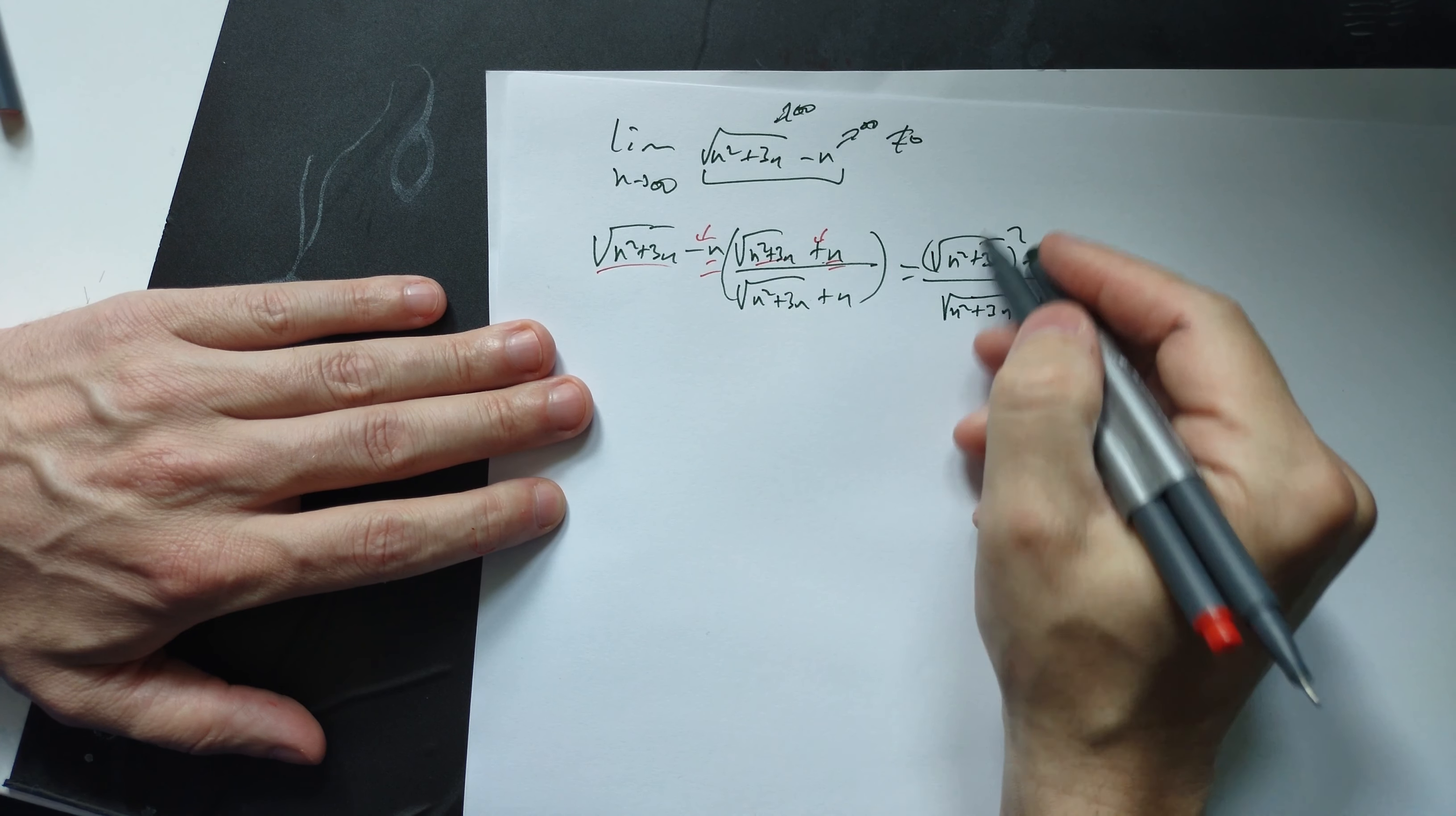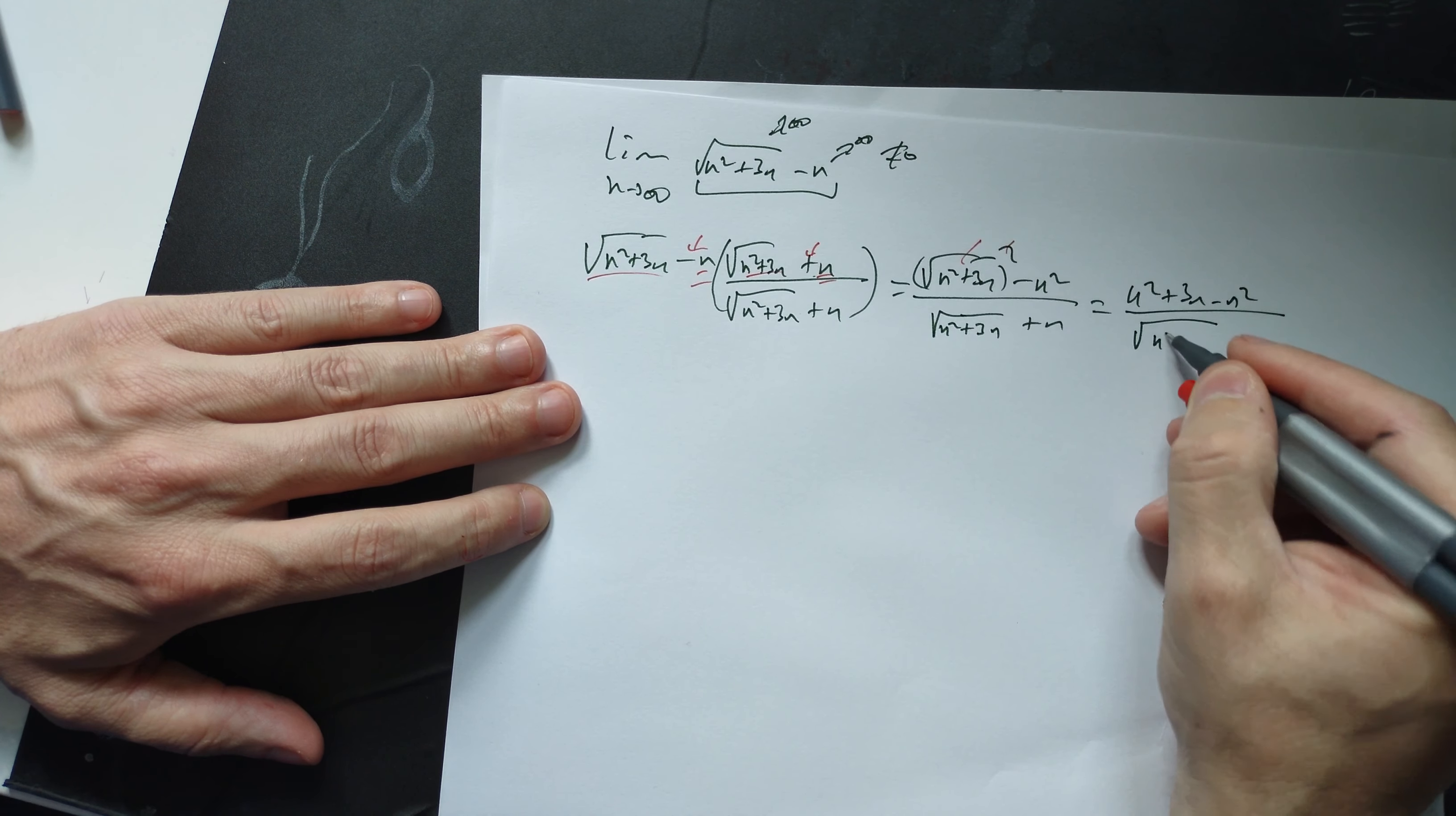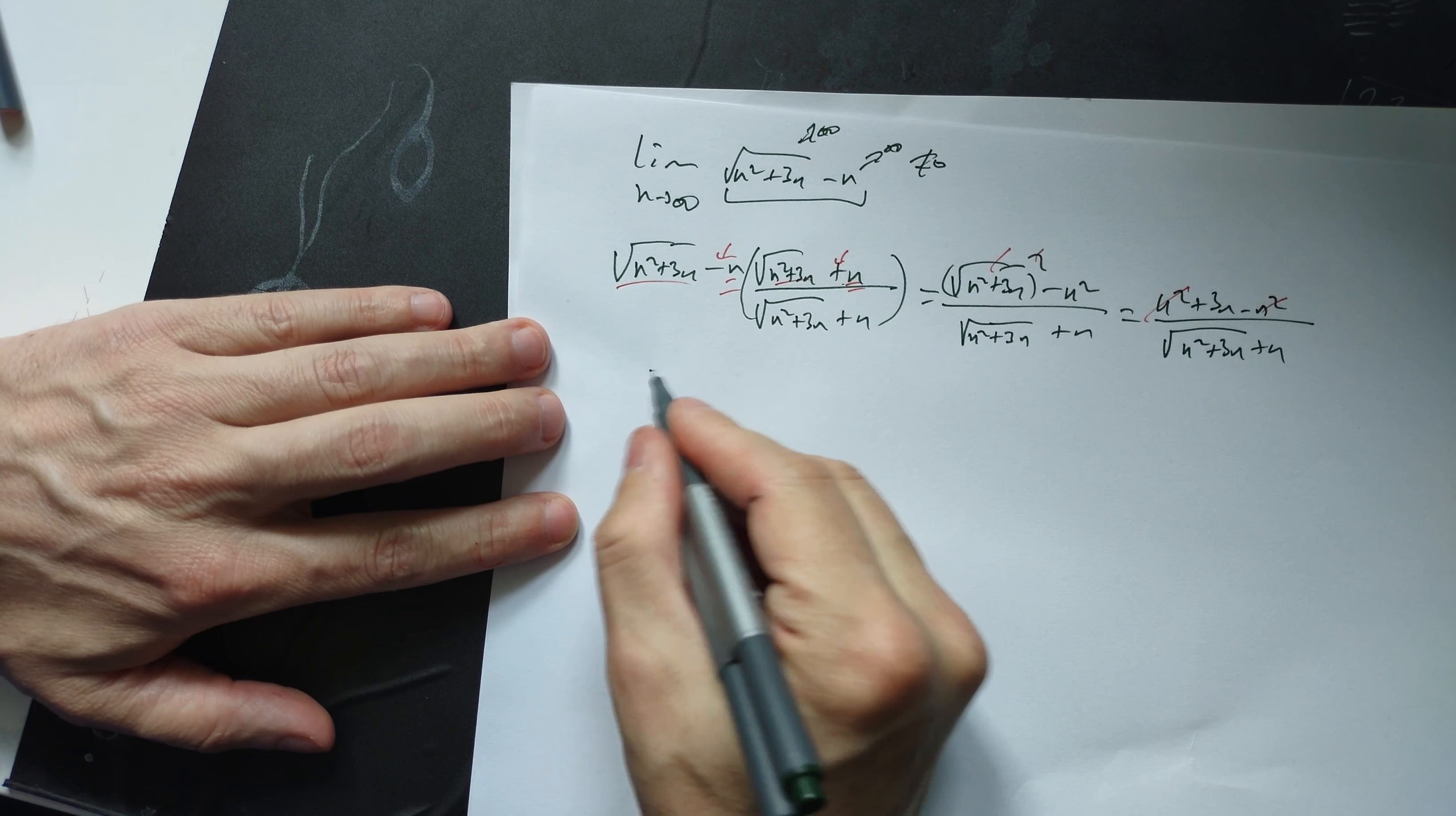Now the n² terms cancel, leaving n² + 3n - n² over √(n² + 3n) + n. This simplifies to 3n over √(n² + 3n) + n. Now you have to factor something out of here.